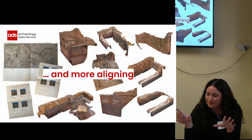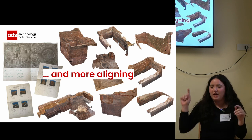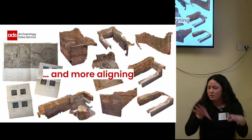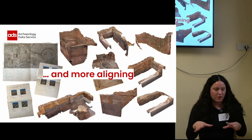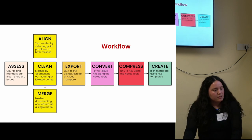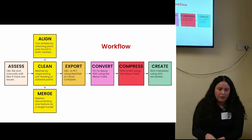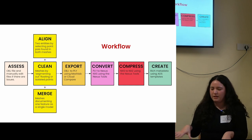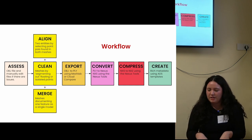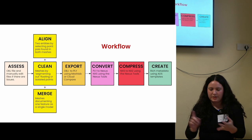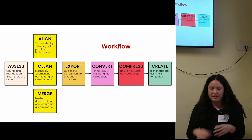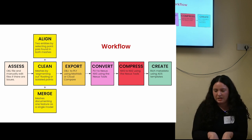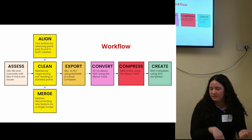At some point it got very confusing. I had to go analog and I used aerial photos of the roundhouse to see what was documented in the 3D models and where it was and just how it all came together. So this is a summary of the workflow that I followed: assess the OBJ file and manually edit it if there are any issues with the texture or material, then align, clean, merge the models, and export them as a single OBJ that we will use for preservation.